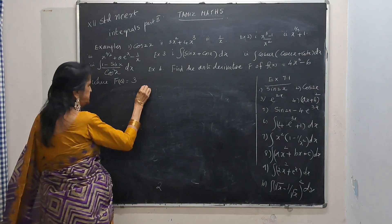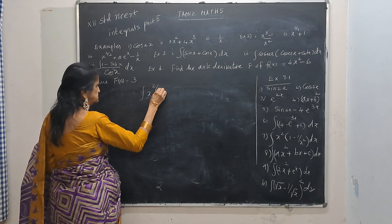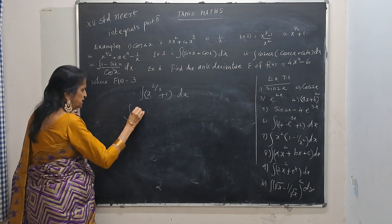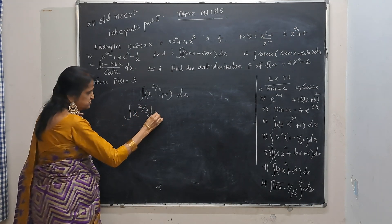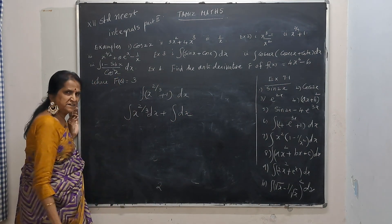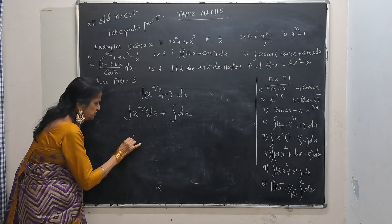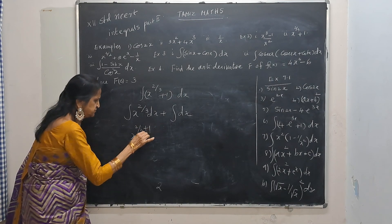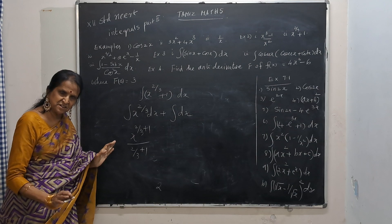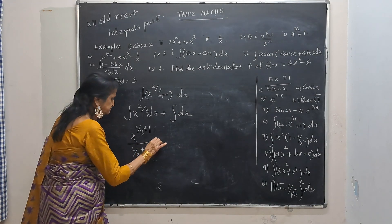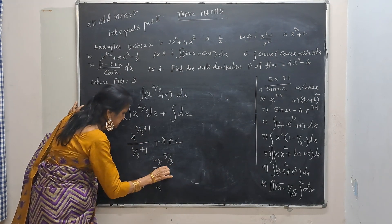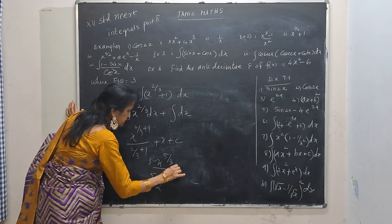The next question: integrate x to the power 2 by 3 plus 1. Split it: integral of x to the power 2 by 3 dx plus integral dx. Here n is 2 by 3, so this is x to the power 2 by 3 plus 1, divided by 2 by 3 plus 1. Integral of dx is just x. Plus c. So this is x to the power 5 by 3 divided by 5 by 3, which equals 3 by 5, plus x plus c.